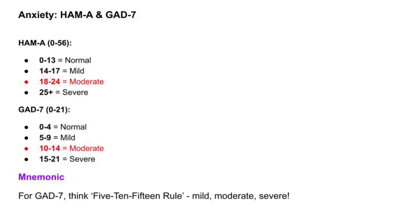Let's look at assessment tools for anxiety: HAM-A and GAD-7. For HAM-A, scores range from 0 to 56: 0 to 13 is normal, 14 to 17 is mild, 18 to 24 is moderate, and 25 and greater is severe. GAD-7 is scored from 0 to 21: 0 to 4 is normal, 5 to 9 is mild, 10 to 14 is moderate, and 15 to 21 is severe. For GAD-7, remember the 5-10-15 rule: mild, moderate, severe.